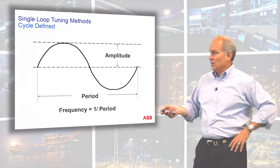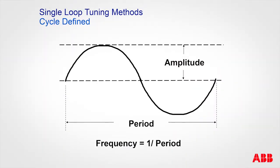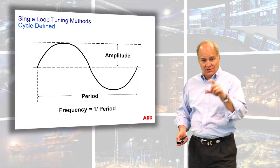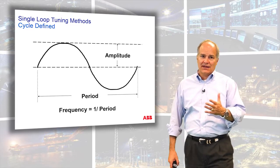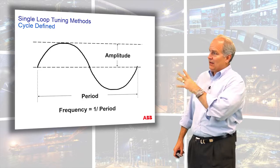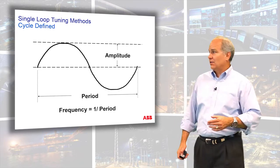To define some terms: we're looking at a sine wave, which is a periodic signal that repeats itself after a period of time — that time is called a period. In one period, the sine wave repeats itself, and it has an amplitude, sometimes called peak to peak. So a sine wave has an amplitude and a period, and it gives the oscillation its characteristic look.